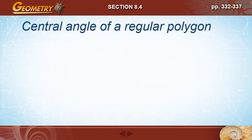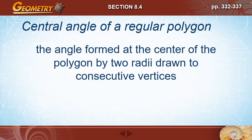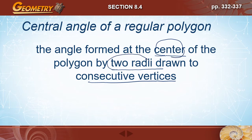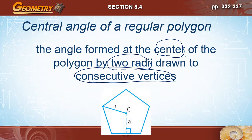The central angle of a regular polygon is the angle formed at the center by two radii drawn to consecutive vertices. Looking at the pentagon, if we draw two radii to consecutive vertices, the central angle is the angle between those two radii at the center.